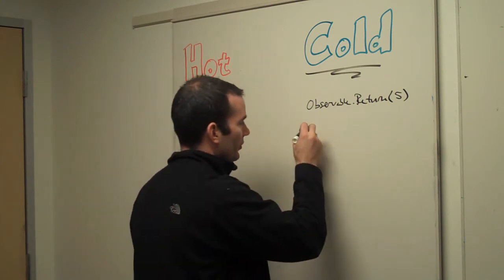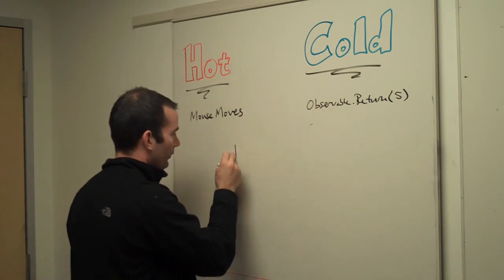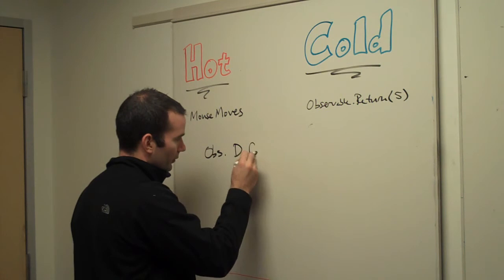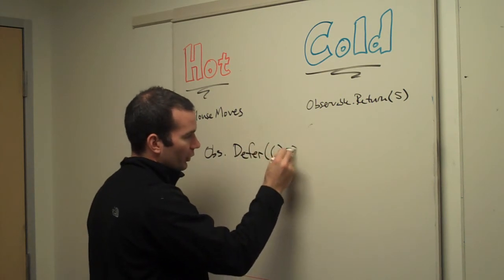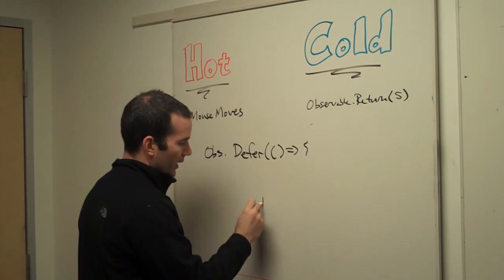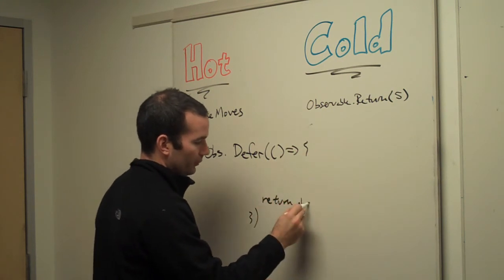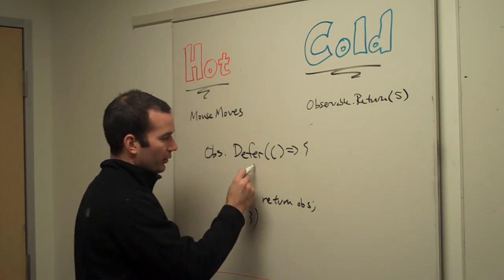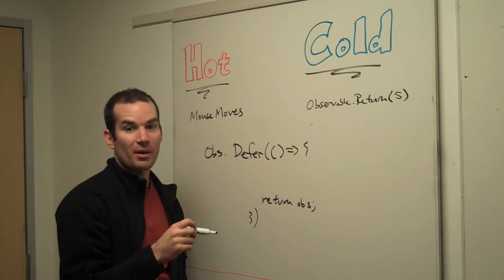Another good example of a cold observable is 'defer' — Observable.defer — which takes a function that has to return an observable. The code inside will actually run only when I subscribe, and for each time I subscribe.